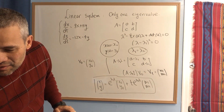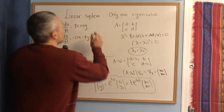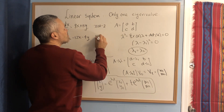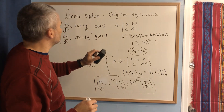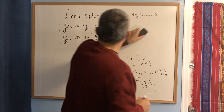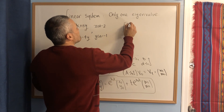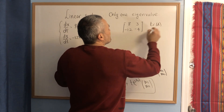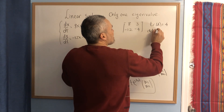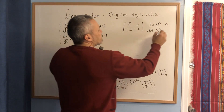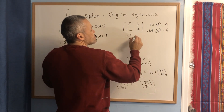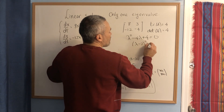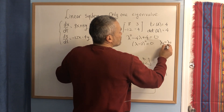Let's suppose the initial condition is x(0) = 2 and y(0) = -1. The matrix of the system is A = [[8, 3], [-12, -4]]. The trace of A is 8 - 4 = 4, and the determinant of A is -32 + 36 = 4. Then the characteristic equation is λ² - 4λ + 4 = 0, which is (λ - 2)² = 0. Therefore λ₁ = λ₂ = 2.